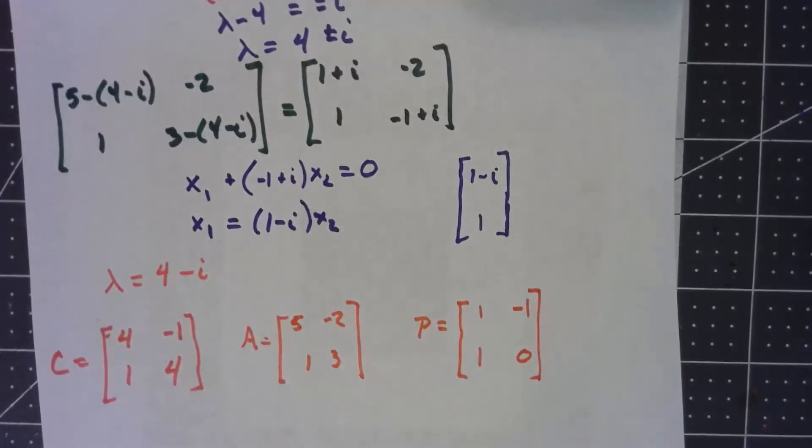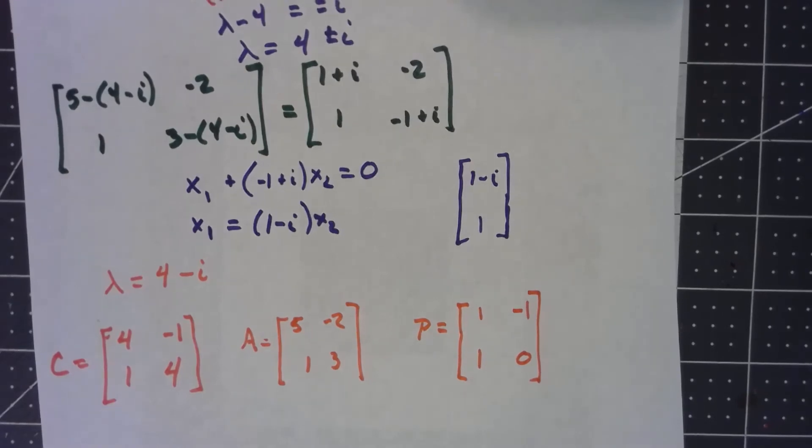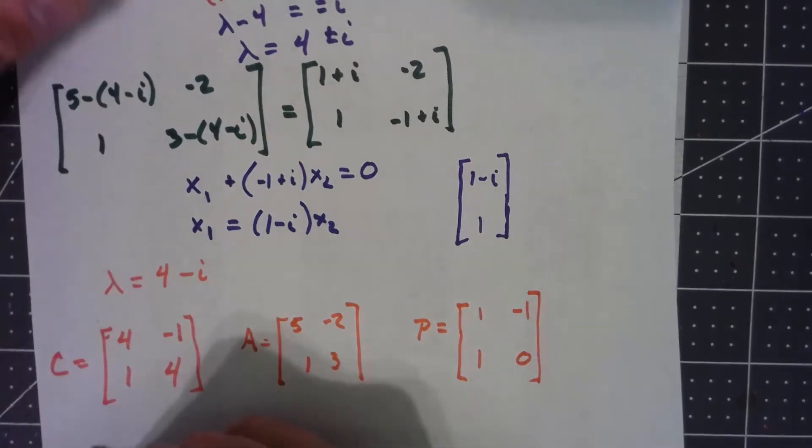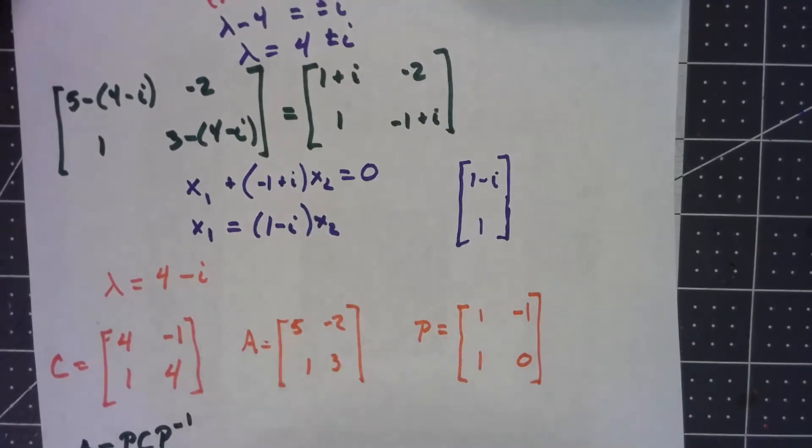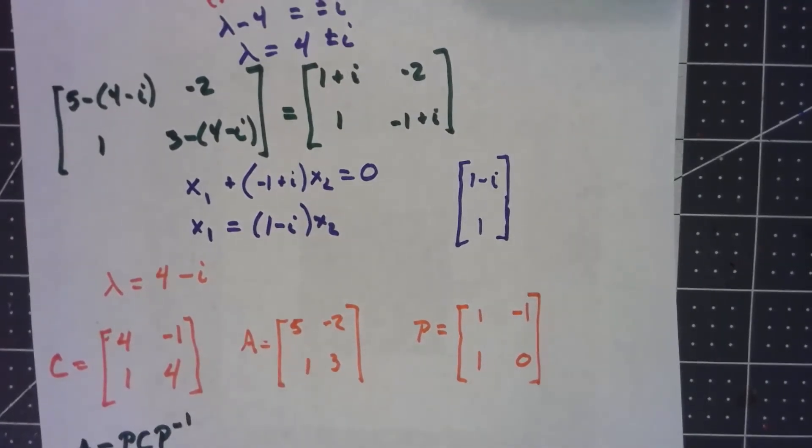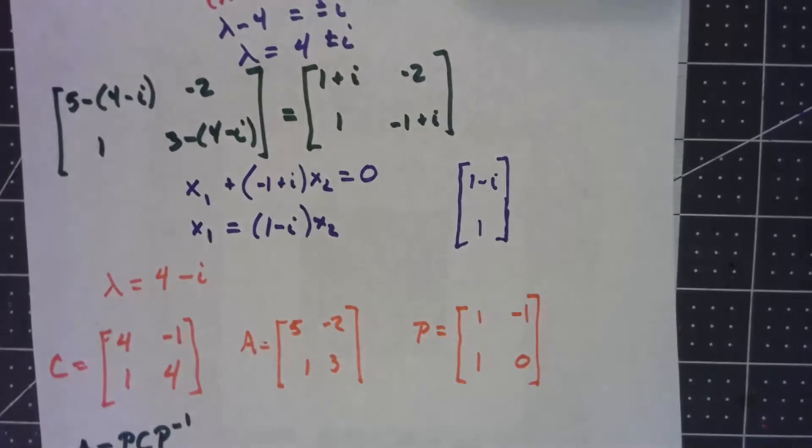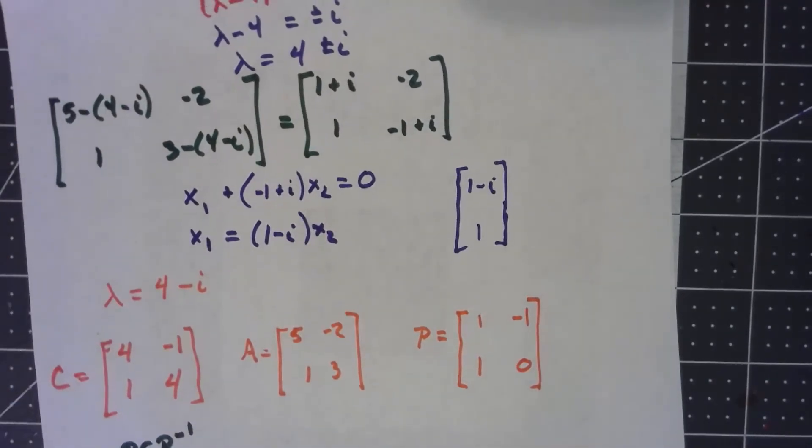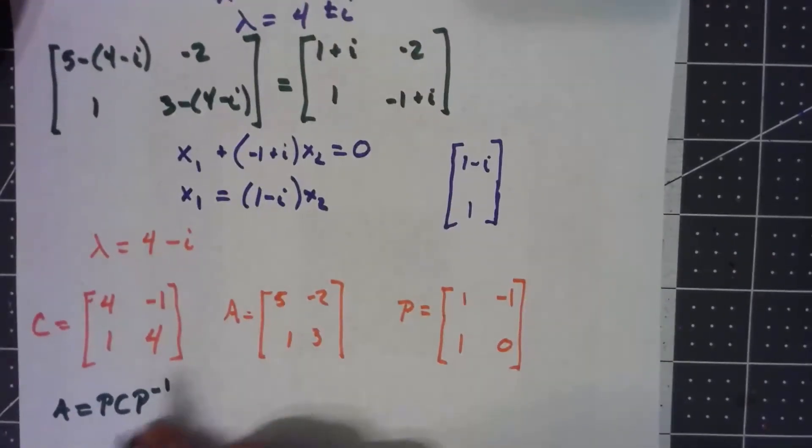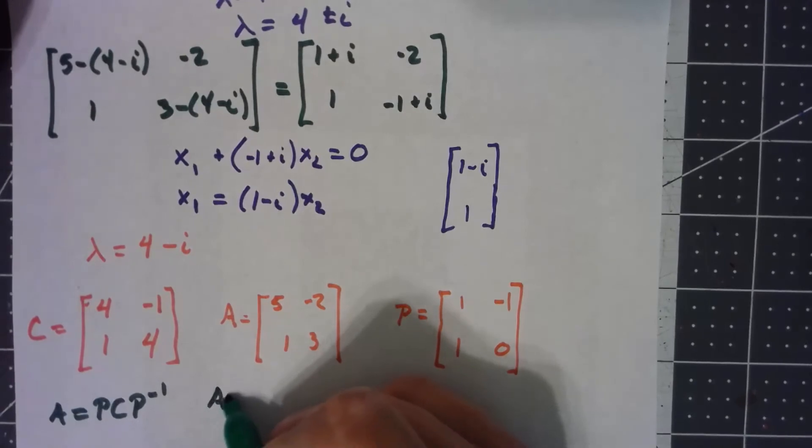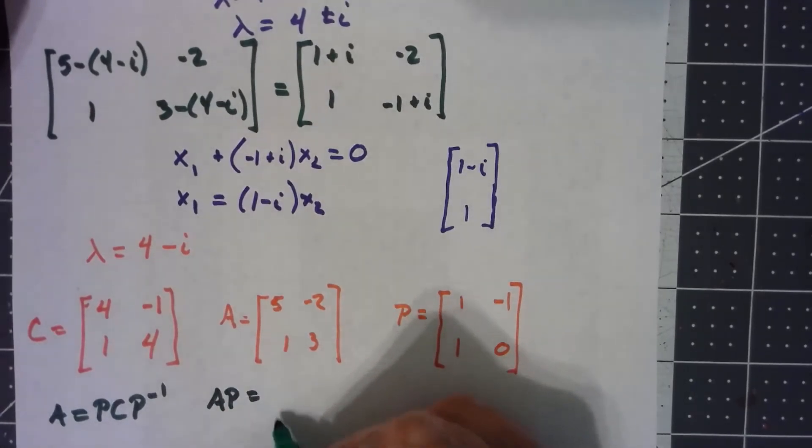So with these three matrices, we should have A = PCP⁻¹. And because it's a 2×2 and in fact has determinant 1, it's really easy to figure out the inverse. However, I'm too lazy for that, and I'll do the trick that we've done before to check that A equals PCP⁻¹. I can check that A times P equals P times C.